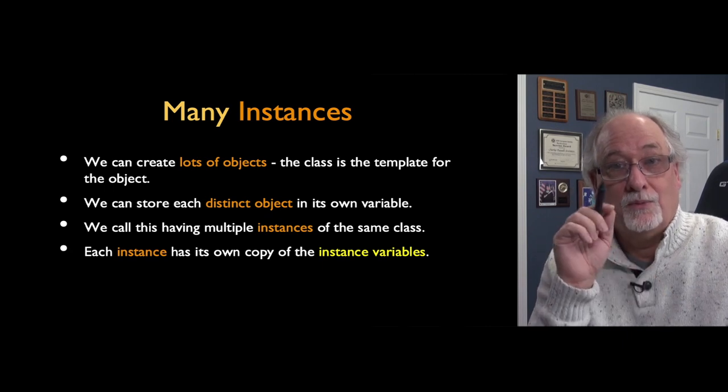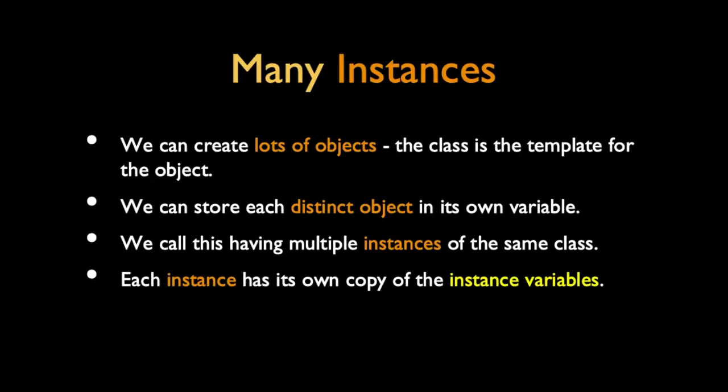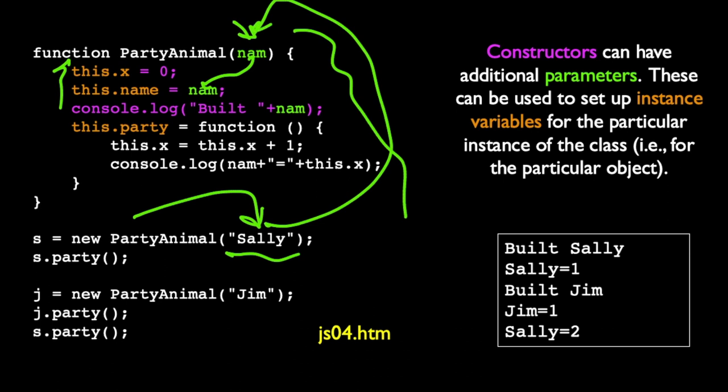Once we have a template, cookie cutter, we have a class, PartyAnimal is our class. Then we can make many different objects. And then those objects have each independent data. That's the key to this. We call this having multiple instances or multiple objects that implement a particular class. Here's our same old PartyAnimal that we've been talking about all along. The only difference now is we actually give a parameter here. One of the things that this is going to do is, as part of its construction, it is going to copy that first parameter into one of the instance variables. So we're going to have two instance variables, this.x and this.name. And we're going to copy whatever that is. It comes from the moment of construction when we're saying, make me a new PartyAnimal. And here's a constructor parameter. So that Sally goes in as nam. So this.name equals Sally. This.x equals zero. And then this.party is exactly the same way.